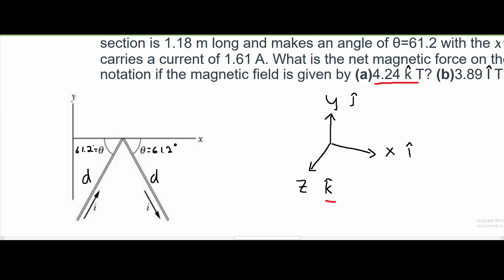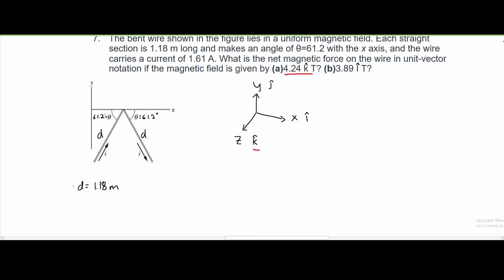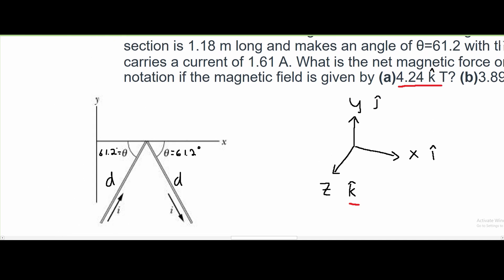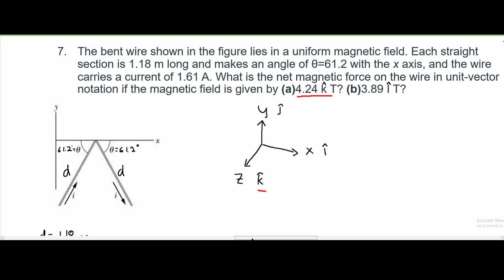We're asked to find the net magnetic force. We're also given a current of 1.61 amps, so i equals 1.61 amps.